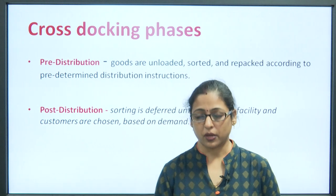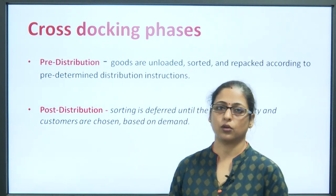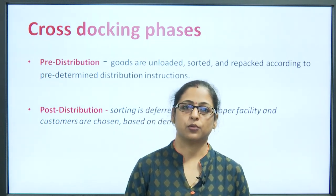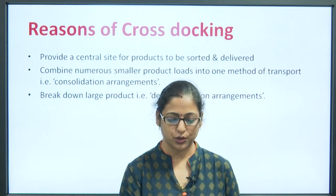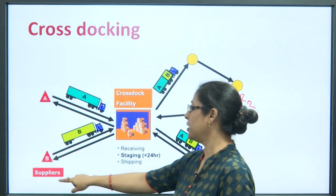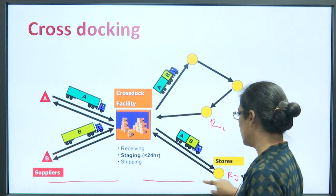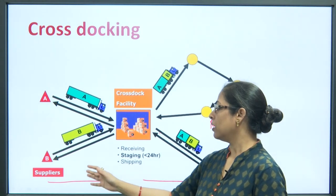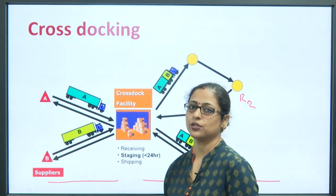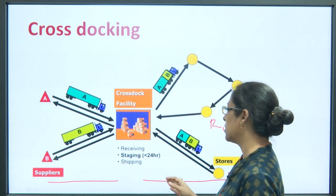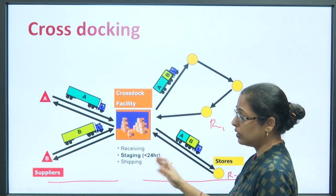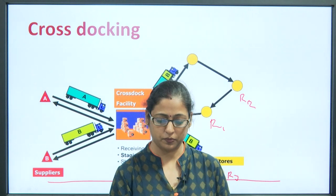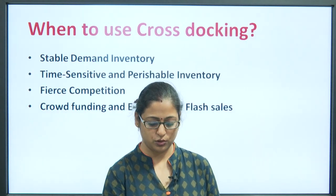Cross-docking has basically two phases: the pre-distribution phase and the post-distribution phase. The pre-distribution phase is when the supplier brings inventories to the cross-docking center — that is, when consolidation is happening. The post-distribution phase is when customers are breaking the bulk and taking the products from the cross-docking center.